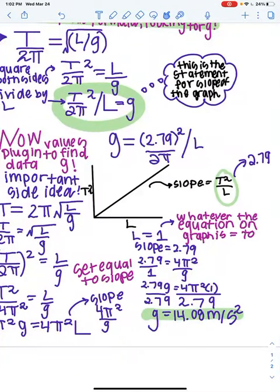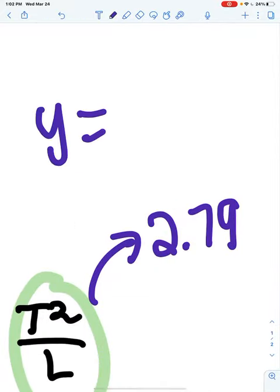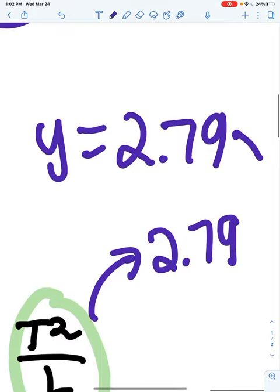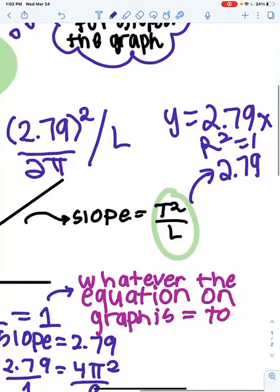Our equation is y equals 2.79x, r squared equals 1. And this is correct because our length was 1, so we know that was right.